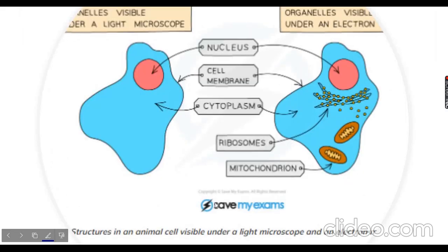Under a light microscope, the animal cell shows only the nucleus, cytoplasm, and cell membrane. Under an electron microscope you can see further contents: ribosomes, which are arranged on membranes like beads — these beads are the ribosomes, and their function is protein synthesis. You can also see mitochondria, which are the site of aerobic respiration that provides energy for the cell — also called the powerhouse of the cell.